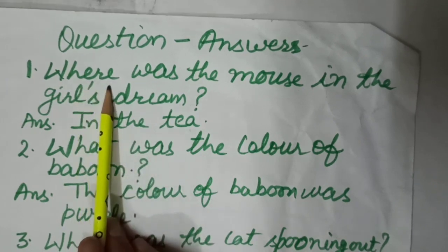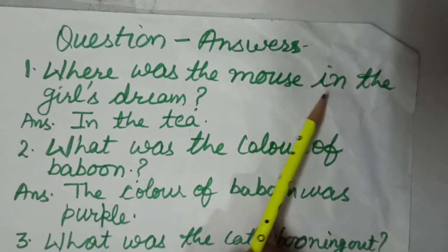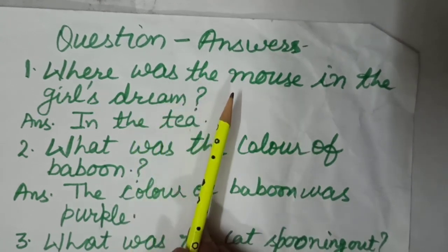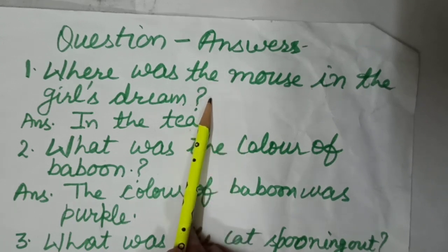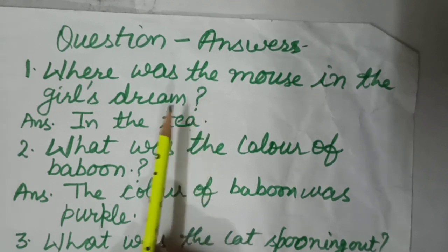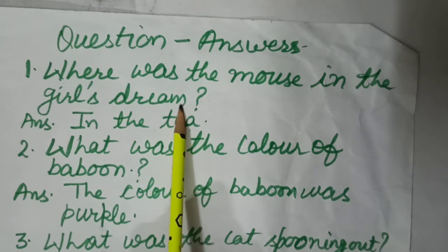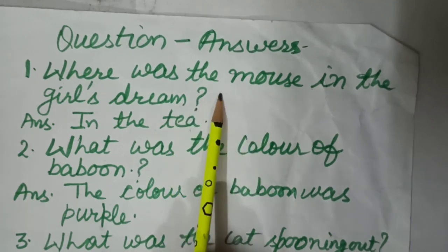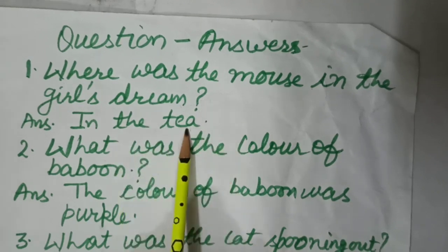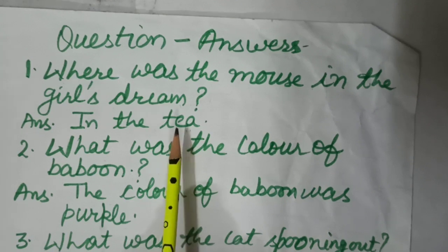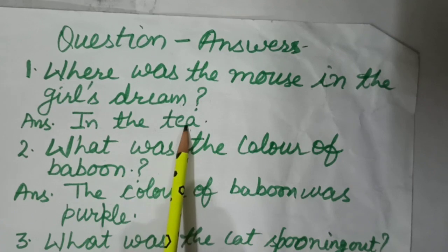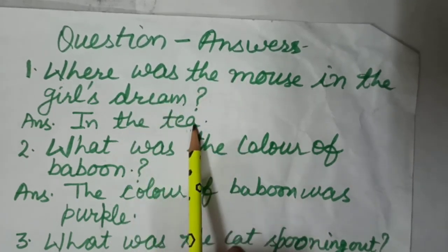Next in the series I am taking question answers, which are in your book as a book exercise. Those who have the book can do it in the book, and those who don't have the book can do it in their notebook for practice. First question: Where was the mouse in the girl's dream? Answer: The mouse was in the tea.